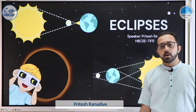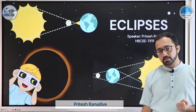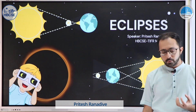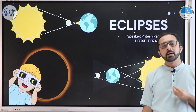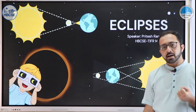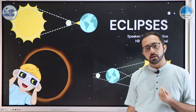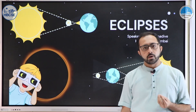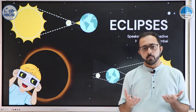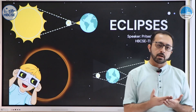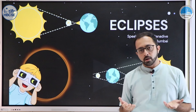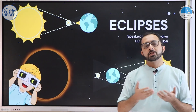Hello everybody, today we are going to talk about eclipses. We will talk about how and why eclipses occur. An eclipse is a phenomenon in which an object is obscured from view either because some other object comes in between the observer and the object you are viewing, or because the object is shadowed by some other object.